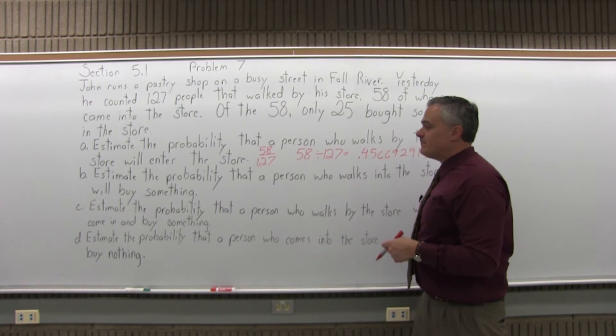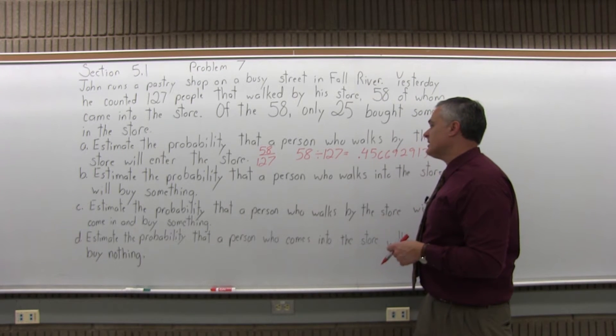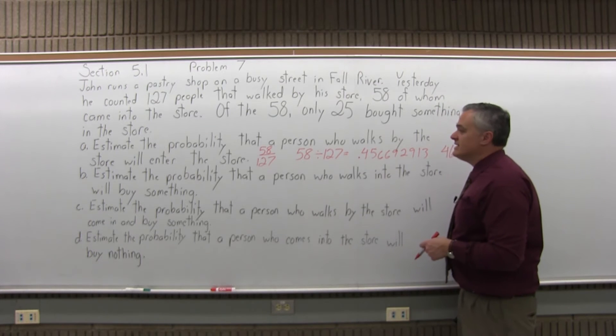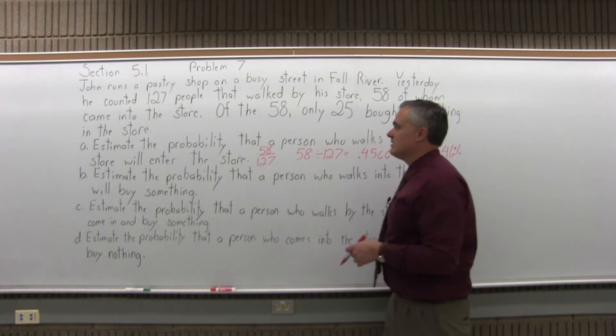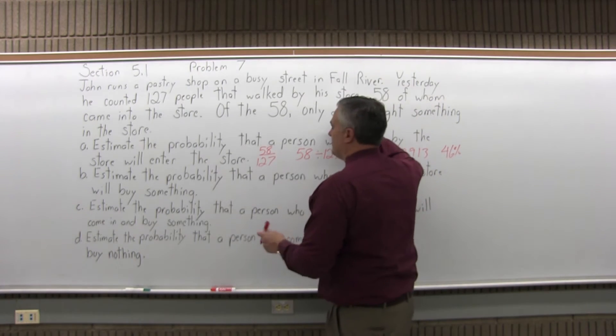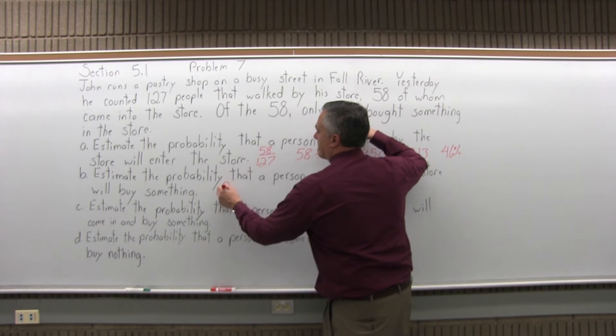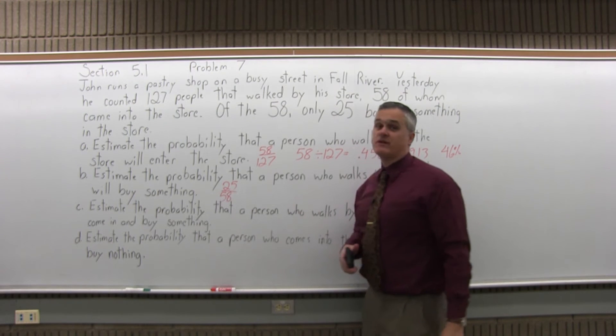Part B: estimate the probability that a person who walks into the store will buy something. You had 25 people that bought something out of 58 that came in the store. So 25 over 58.